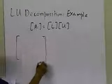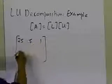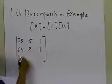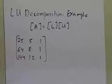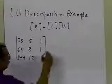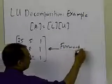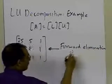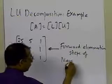So let's see how we go about doing that through an example. Someone gives us this 3 by 3 system — 3 equations, 3 unknowns — with the matrix entries 25, 5, 1 in the first row; 64, 8, 1 in the second row; and 144, 12, 1 in the third row. We want to write this as a lower triangular matrix multiplied by an upper triangular matrix. To do that, we're going to perform the forward elimination steps of the Naive Gaussian method.